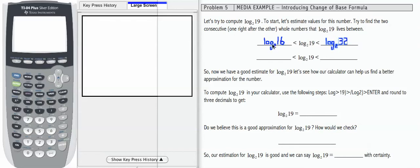The reason I'm doing this is because log base 2 of 16 equals the whole number 4, because 2, the base, raised to the fourth power equals 16. Log base 2 of 32 equals 5. So now I know that log base 2 of 19 is going to be somewhere between 4 and 5.